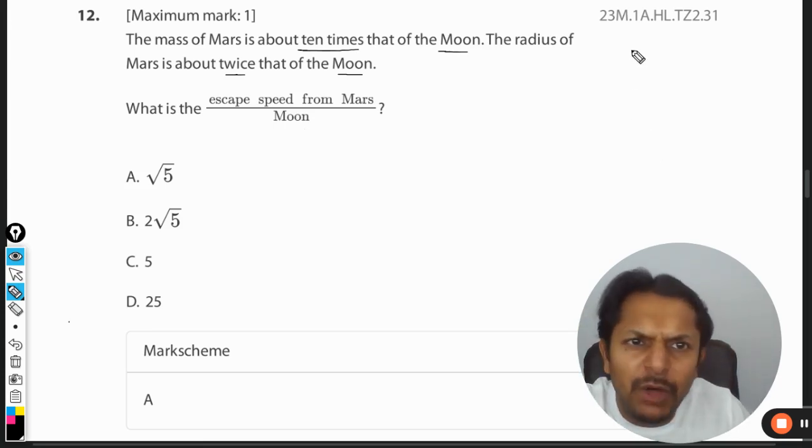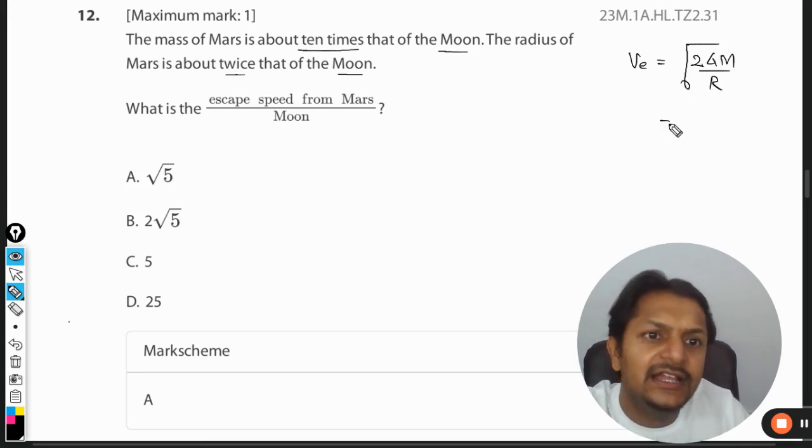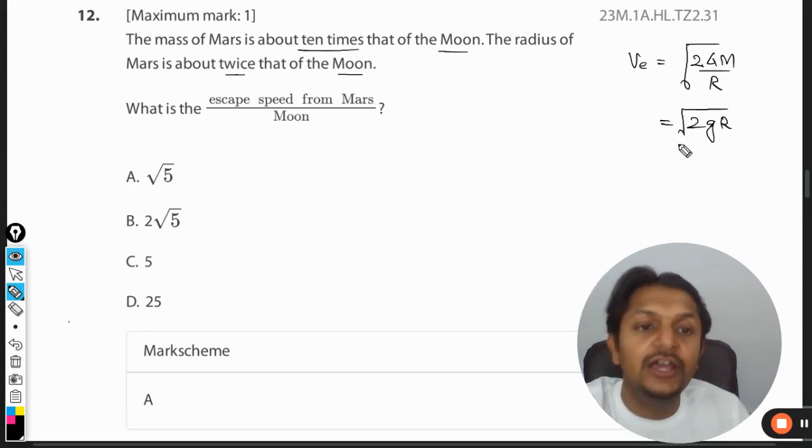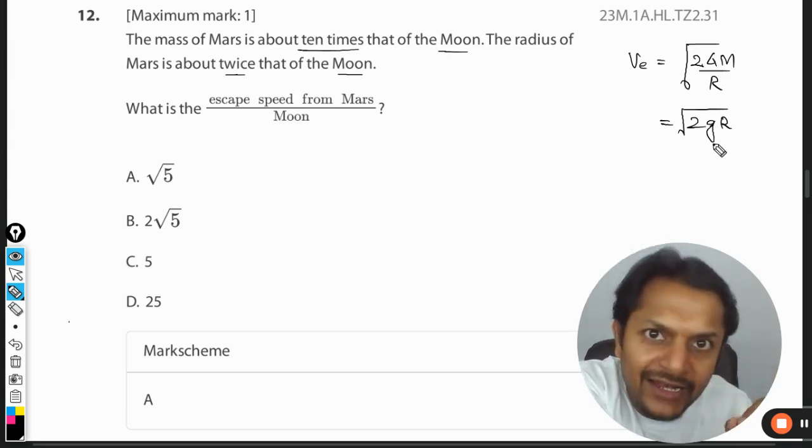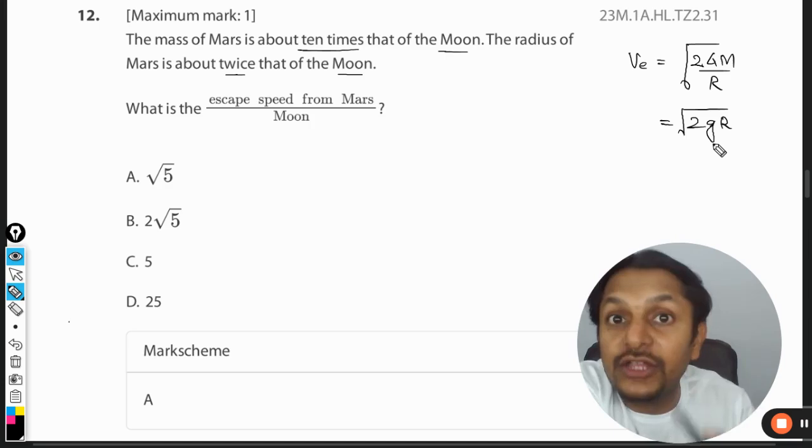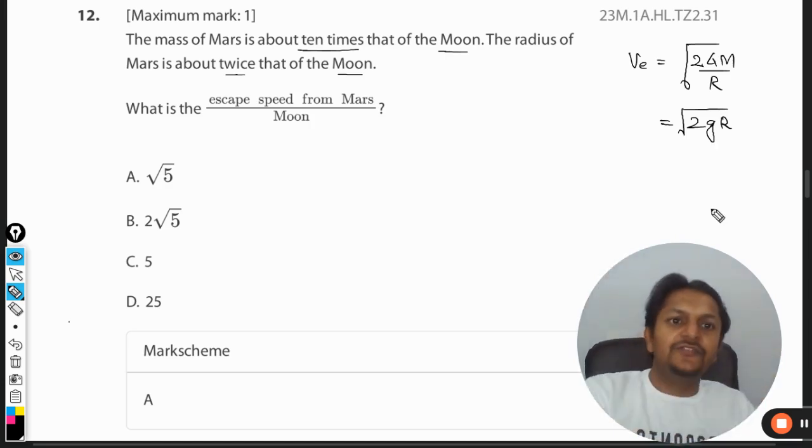We literally have the formula: escape speed is given by the square root of 2GM divided by R. We would be using this. There is another formula for escape speed, which is square root of 2gR, but this g is the acceleration due to gravity at the surface of the planet or astronomical object. That is not given to us, neither for the Moon nor for Mars, so it's a clear cut hint that we are not going to use this.